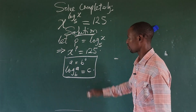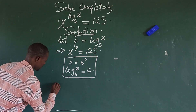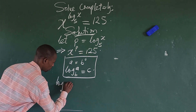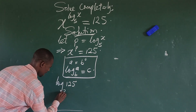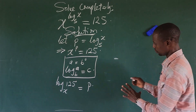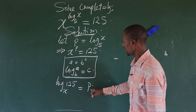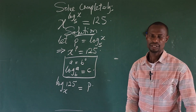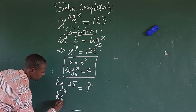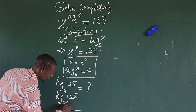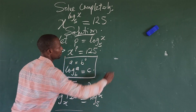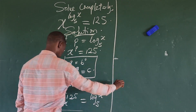So we want to write x^p = 125 in logarithm form. This gives us log_x(125) equals p. Now we know that p equals log_x 5, so substituting back, we get log_x(125) equals log_x 5.